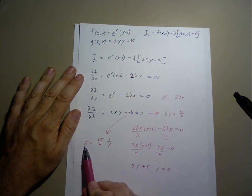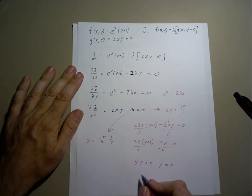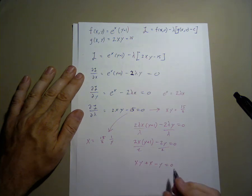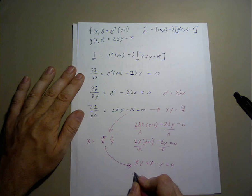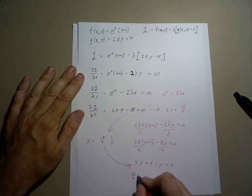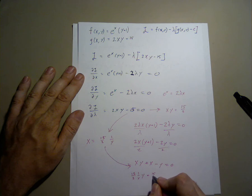If I substitute this into our equation, we get 15 over 2 times 1 over y times y, plus 15 over 2 times 1 over y, minus y.